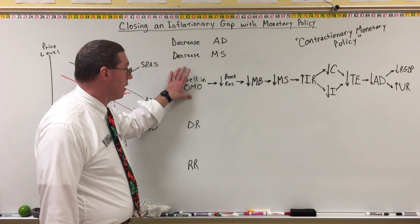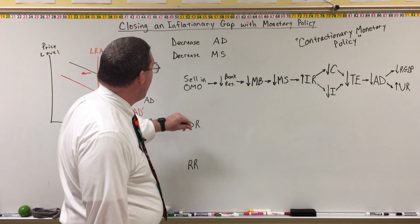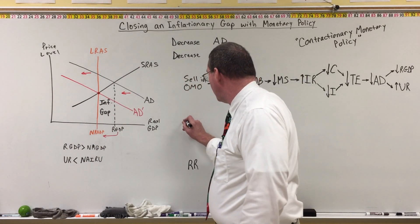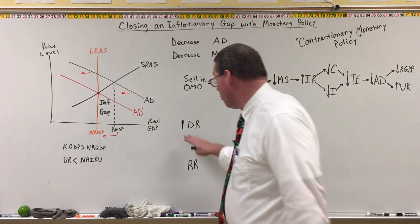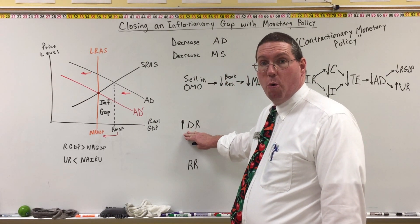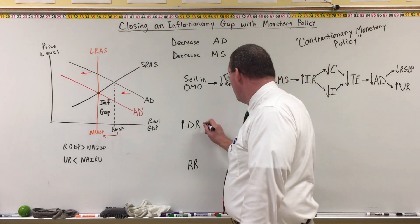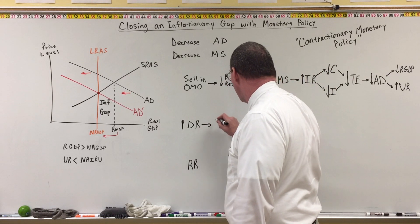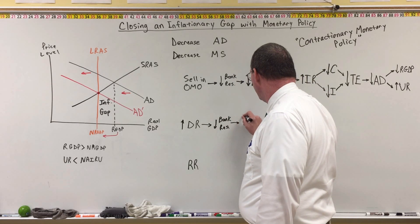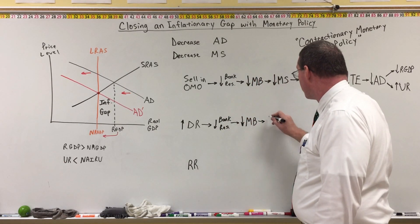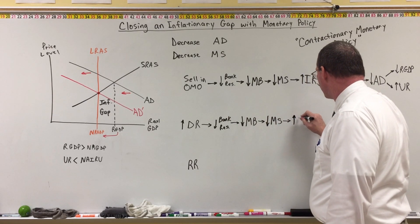If selling securities in the open market isn't having an effect, the Fed will move to the discount rate. To decrease the money supply, they need to increase the discount rate — charge banks more money for borrowing from the Fed. Hopefully, the banks will say they don't want to borrow much from the Fed, so they're also not going to lend much money out, which will restrict borrowing and spending, and hopefully cool off the economy. Because banks are not borrowing as much due to a higher discount rate, that will decrease bank reserves. Banks won't borrow as much into their reserves to loan out, which leads to a decrease in the monetary base, triggering money destruction and a decrease in the money supply, causing a leftward shift of the money supply curve and causing interest rates to go up.